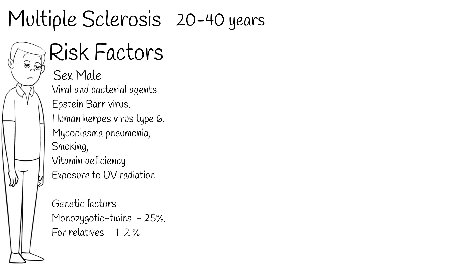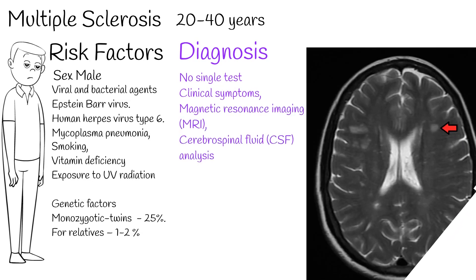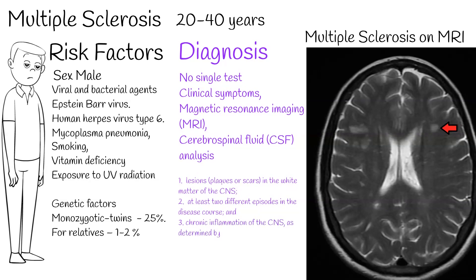Diagnosis: There is no single diagnostic test for multiple sclerosis. Diagnosis is made based on clinical symptoms, magnetic resonance imaging (MRI), and cerebrospinal fluid (CSF) analysis. The diagnosis requires evidence of at least two different lesions (plaques or scars) in the white matter of the CNS, at least two different episodes in the disease course, and chronic inflammation of the CNS as determined by CSF analysis — the inflammatory criterion.